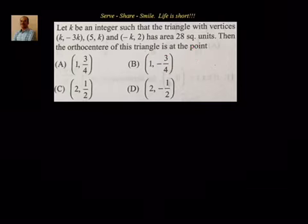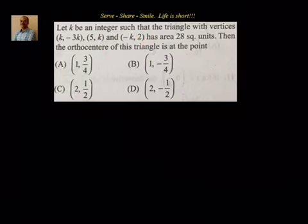We have been given the vertices of a triangle in terms of k, and we have been given the area. So we can use the area formula to find out the value of k, then substitute k back to get the vertices. Once we know the vertices, we can easily find the orthocenter.